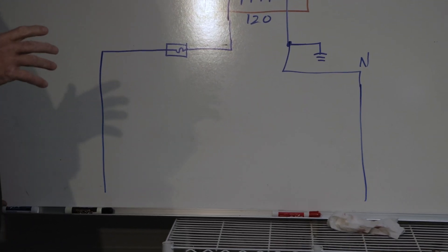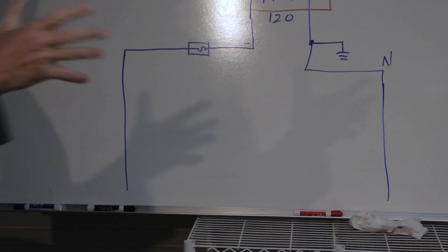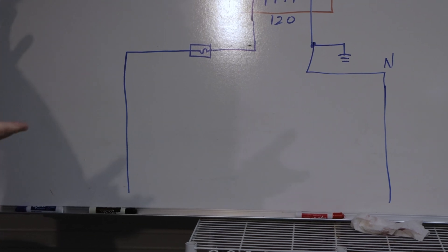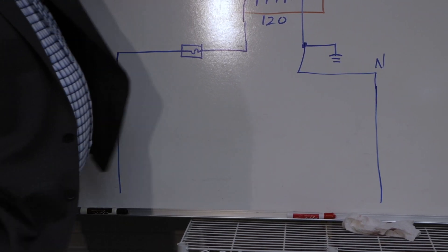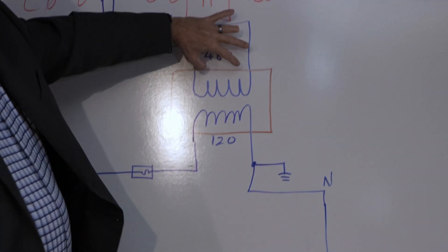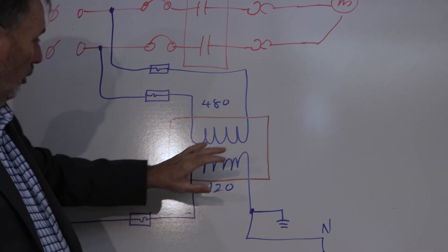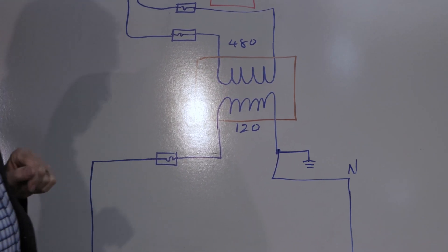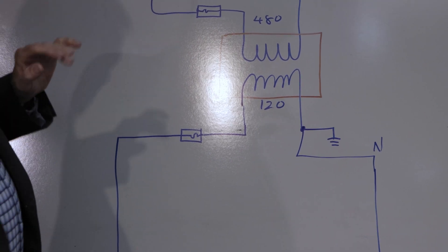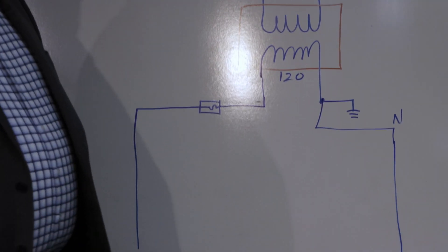Now, once I get to this point, this is pretty much the power part of motor controls. Once again, I've got 480 here, 480 on the primary of the transformer, 120 on the secondary of the transformer. And everything else here is 120 volts.